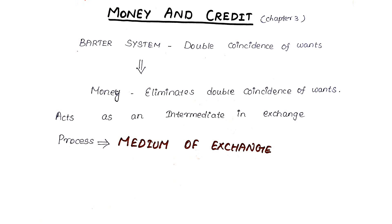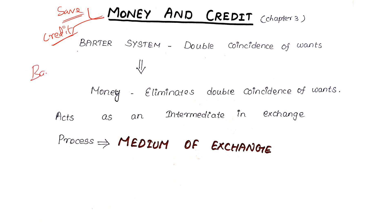In this chapter, we will talk about money. We need to cover two main concepts: saving money, and the barter system. We are also going to introduce the banking system.